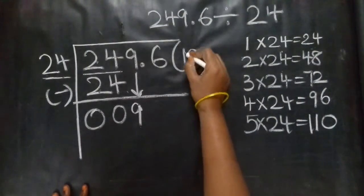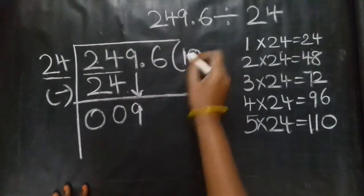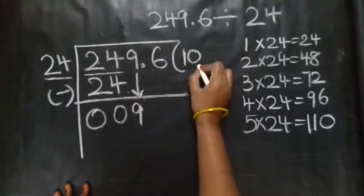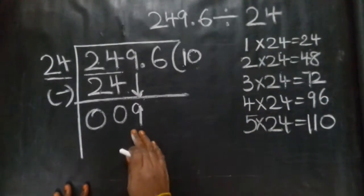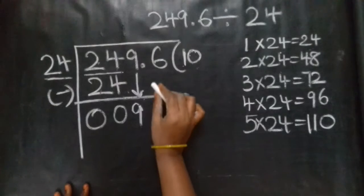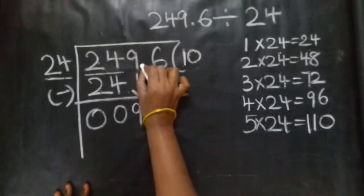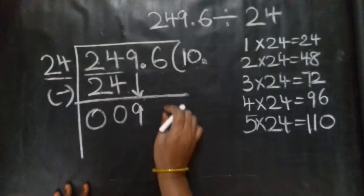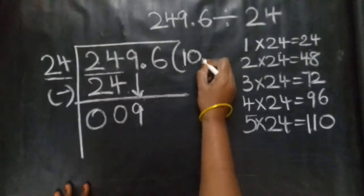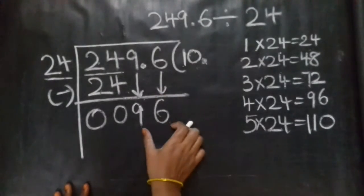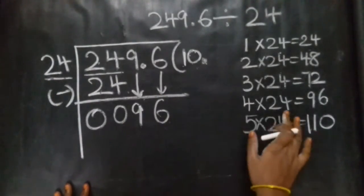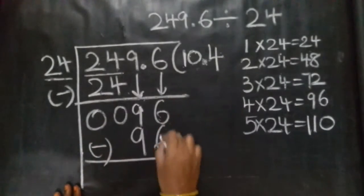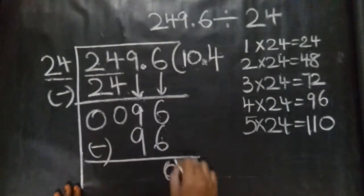But 9 is less than 24 — 1 times 24 is 24, and 9 is less than that. So we write 0 and bring down the next digit. We bring down to get 96. So 24 times 4 equals 96. Then subtract: 6 minus 6 is 0, 9 minus 9 is 0.